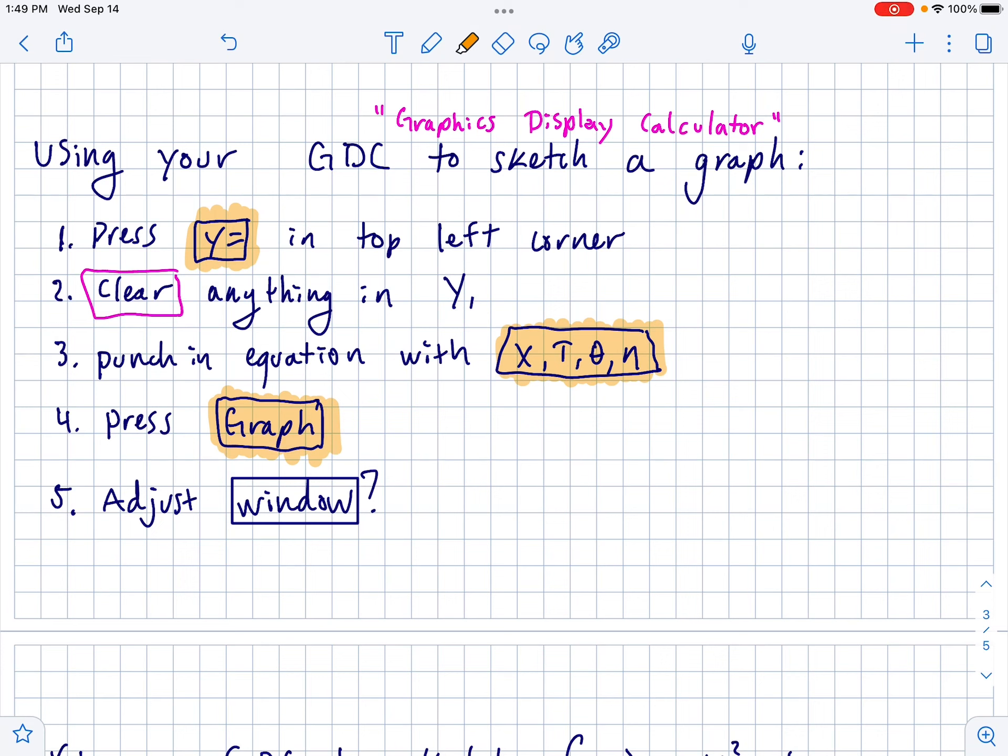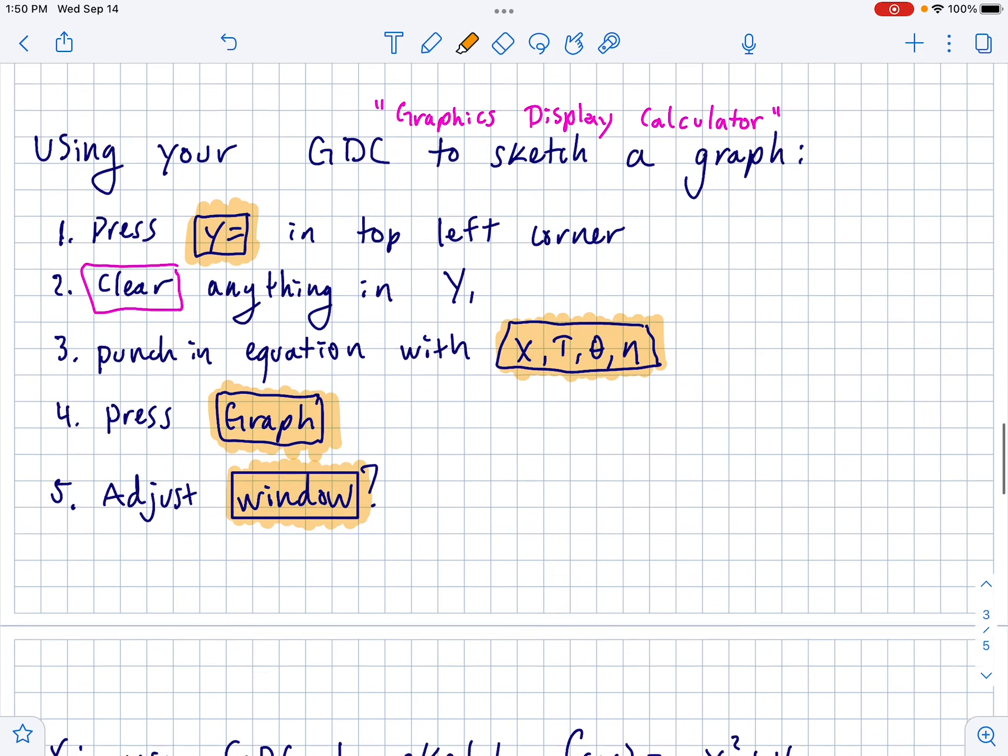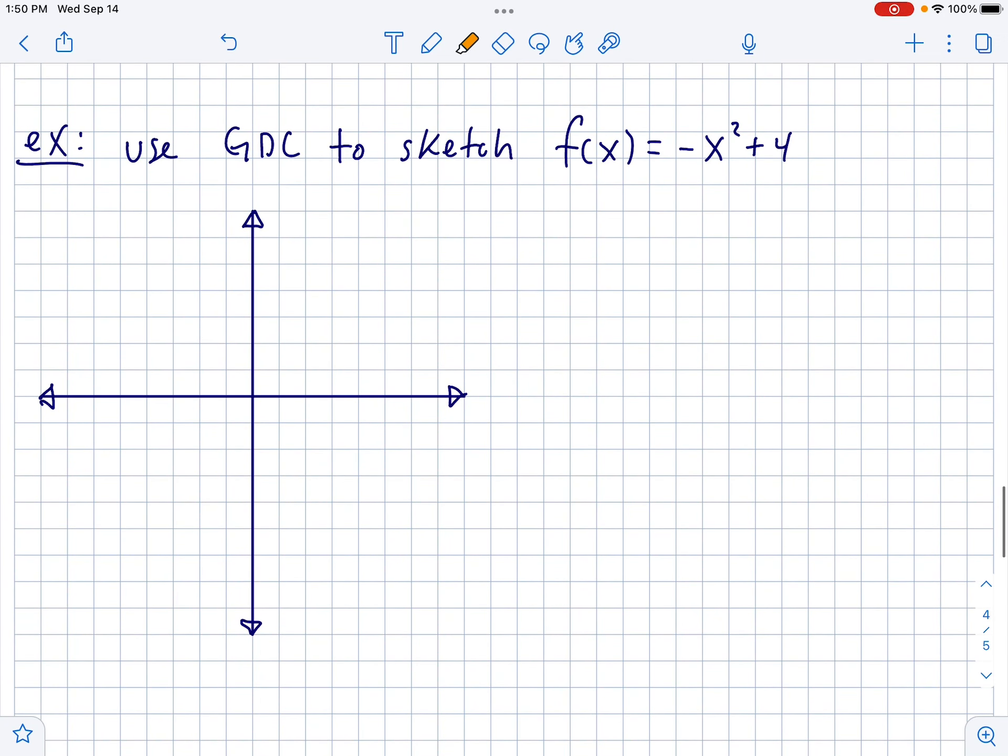Then, if you can see a good view of the graph, cool. But sometimes, depending on what's been going on with your calculator, your window might not look good. So, you might have to adjust your window. You can hit your window button and then punch in values for the x min, x max, y min, y max.